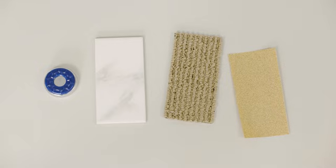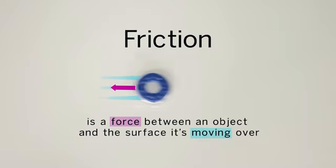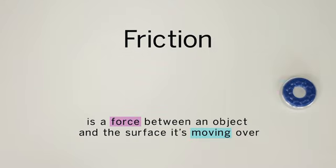The distance the puck travels depends on the strength of the friction force between the puck and each surface. Friction is a force between an object and the surface it's moving over. Friction is always exerted in the opposite direction of an object's motion, so it causes objects to slow down.